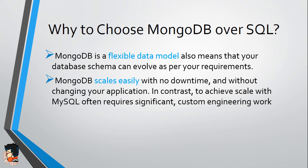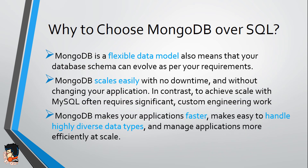The third point is MongoDB makes your application faster. It makes it easy to handle highly diverse data types and manages applications more efficiently at scale — and at very high scale, because MongoDB has really high scalability and yet it's much faster.